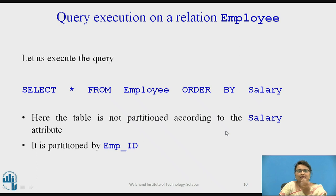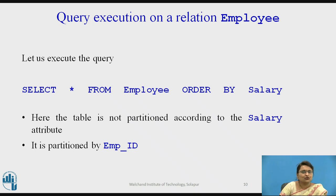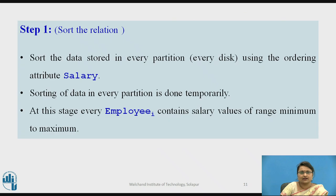Now let us apply the query: SELECT * FROM employee ORDER BY salary. We want the relation sorted by the attribute salary. The first step is to sort the data stored in every partition — every disk — using the ordering attribute salary.